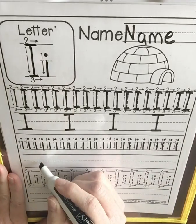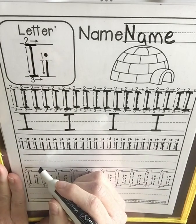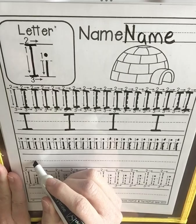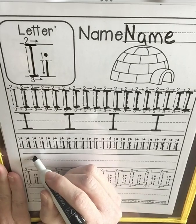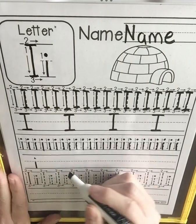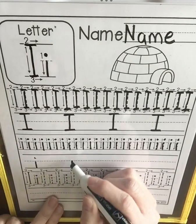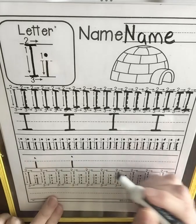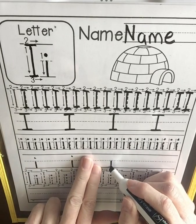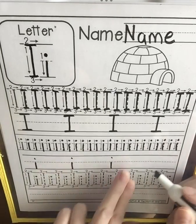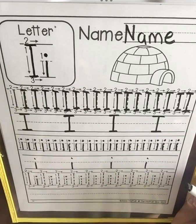Let's work on those on our own. Again, we're just going to do four, and our nicest neatest writing. Little line, jump back up, and a dot. Two finger space, little line, and a dot. Two finger space, little line, and a dot. Little line, and a dot.